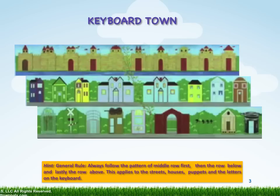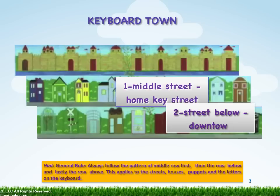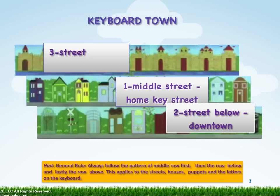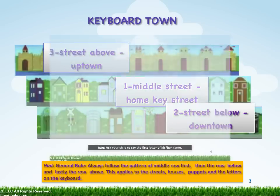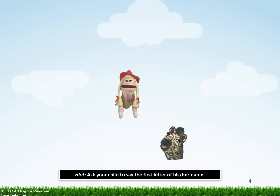This is Keyboard Town. It has only three streets. The middle street is called Home Key Street. The street below is called Downtown and the street above, Uptown. Puppets live in the town. Would you like to meet Amy, Zebra, and Q-Word?